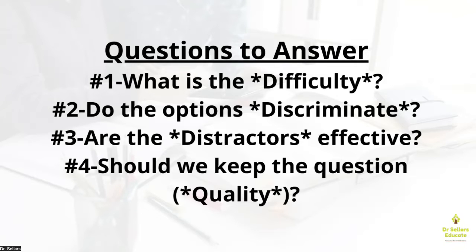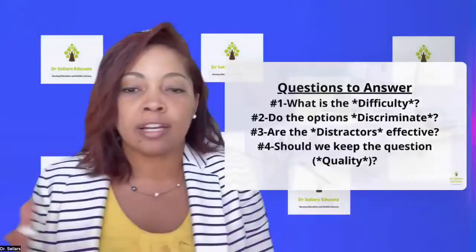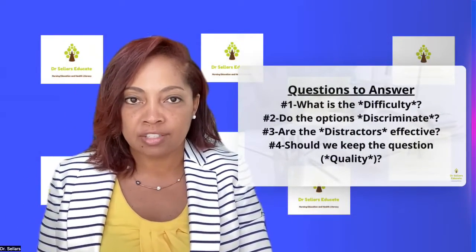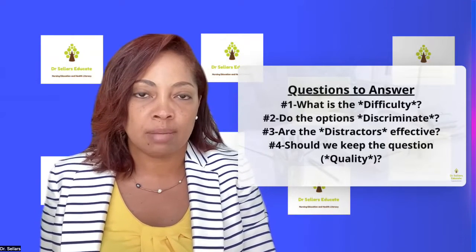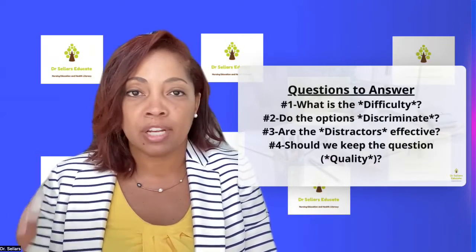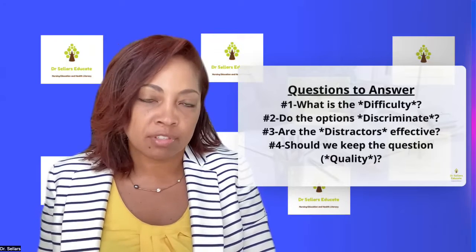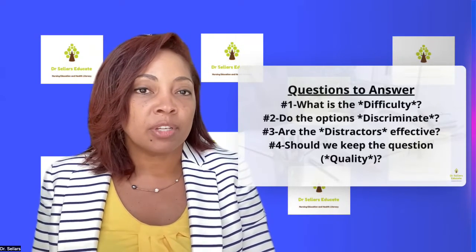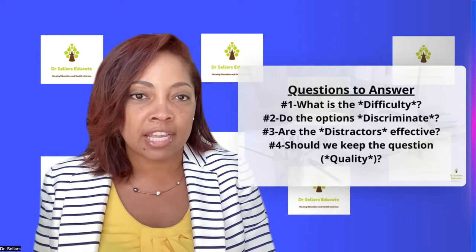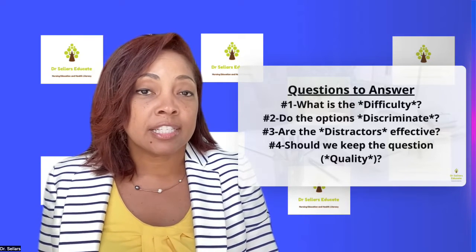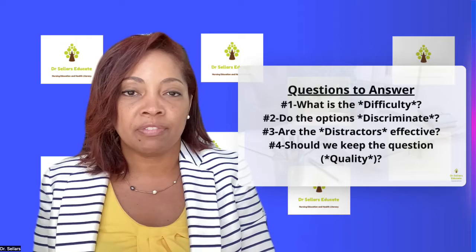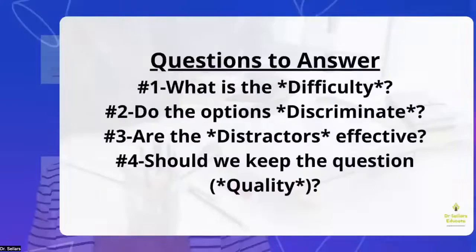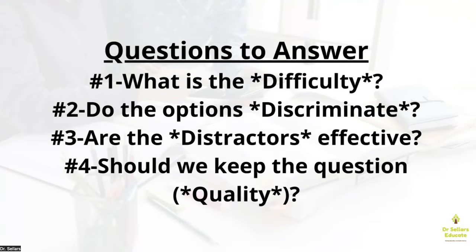We can only decide whether to keep a question based on our review of the statistical analysis report and the exam review when we meet with students — that's the qualitative component. We want to talk about questions that did not discriminate well between high and low performers and have a conversation about that content. The first step to ensure a valid and reliable exam is developing a solid exam blueprint that maps content and cognitive levels to every single question.